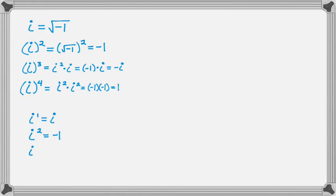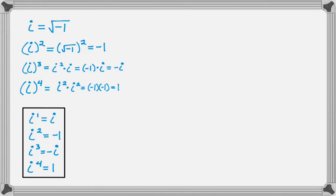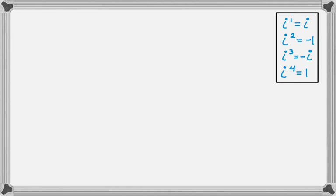To summarize: i to the first is i, i squared is negative 1, i cubed is negative i, and i to the fourth is positive 1. And we just cycle through those. So let's take a look at some problems.